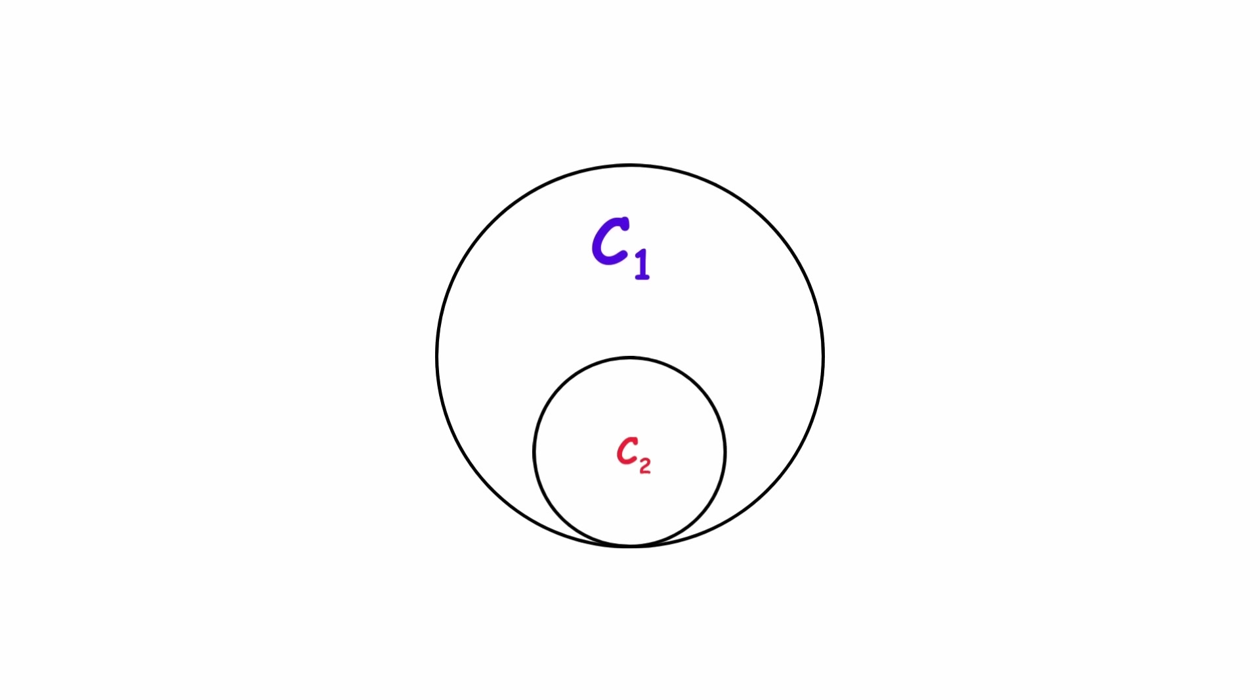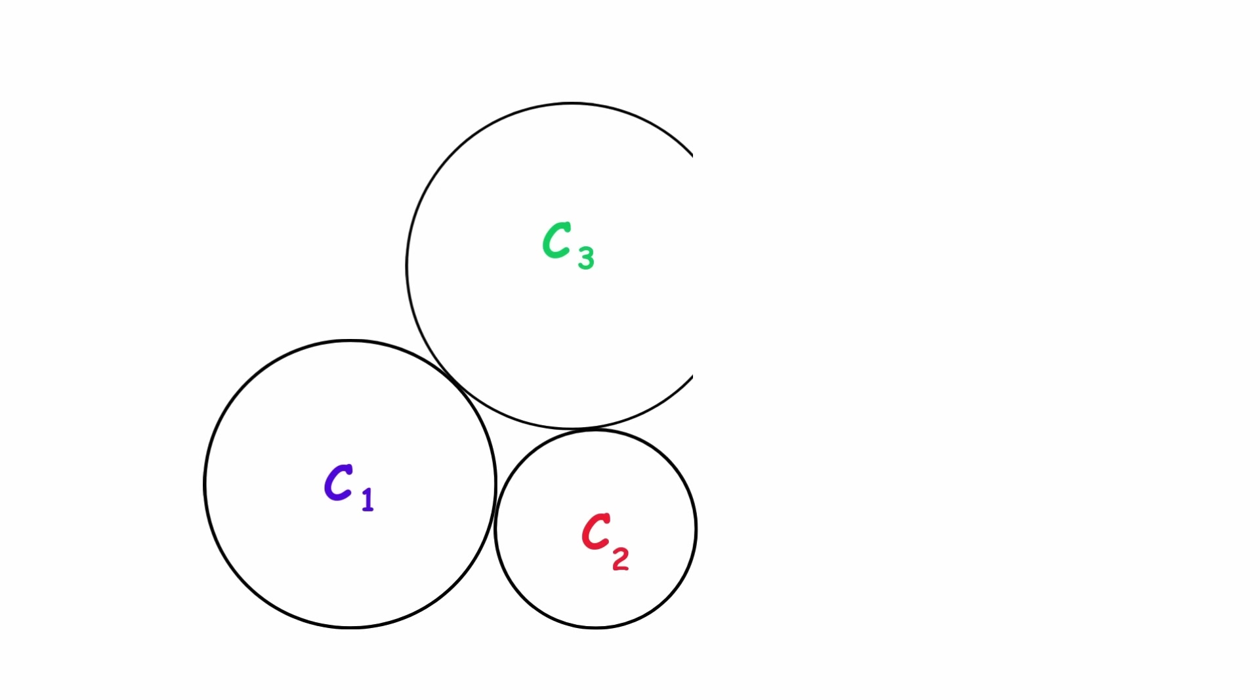You can even draw it so that either circle is inside of the other if you want. Now, draw a third circle, C3, tangent to both of the first two.